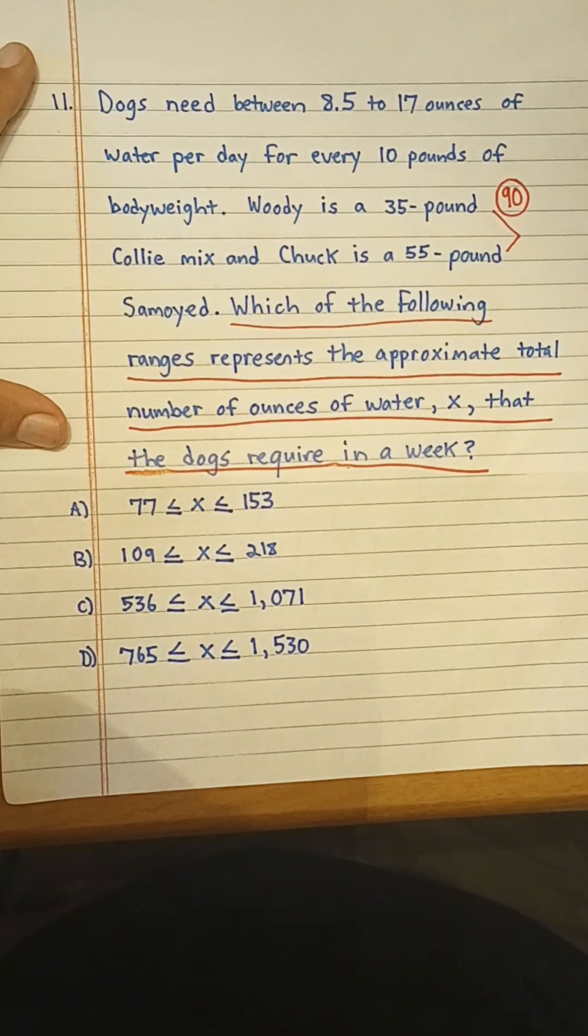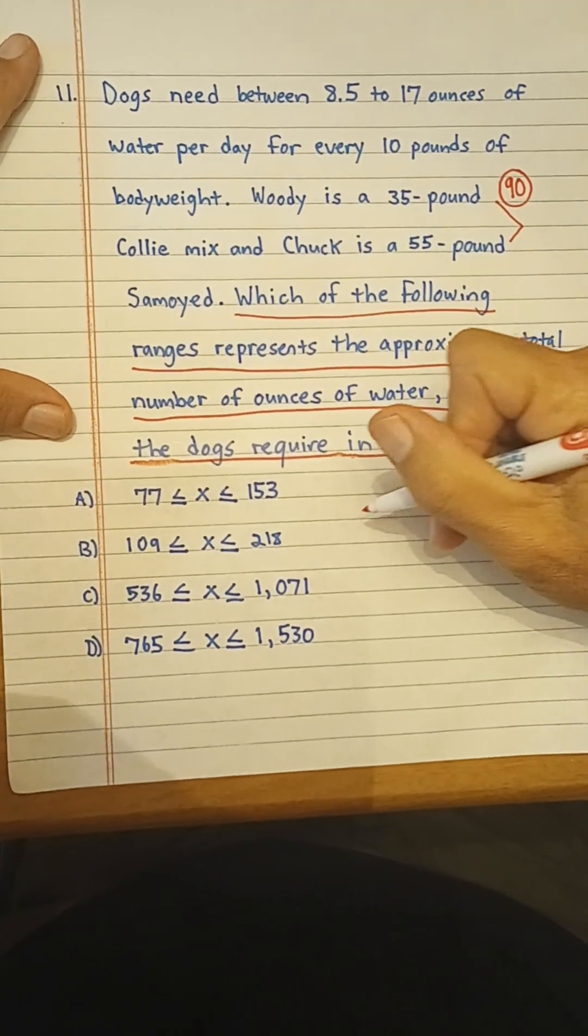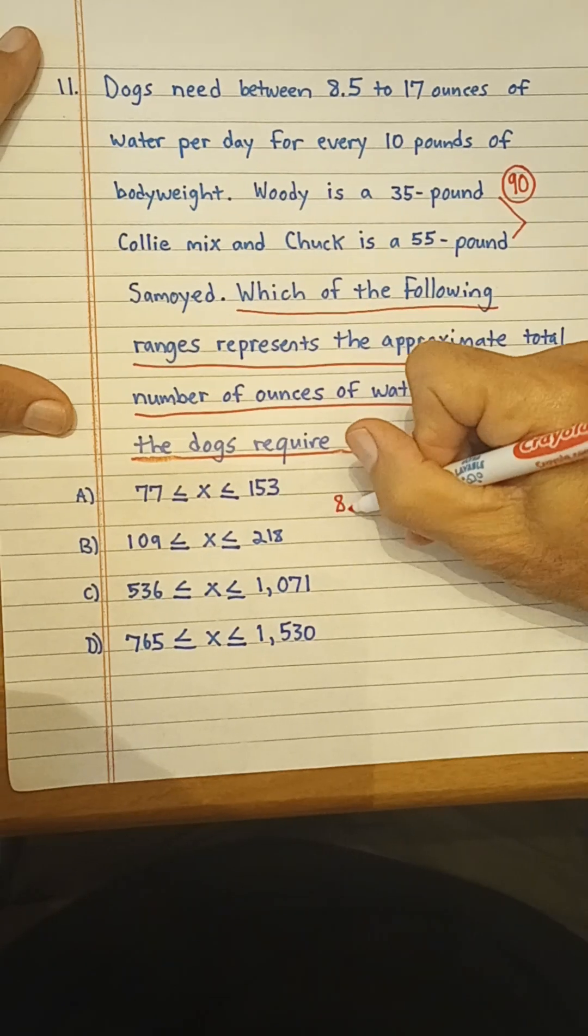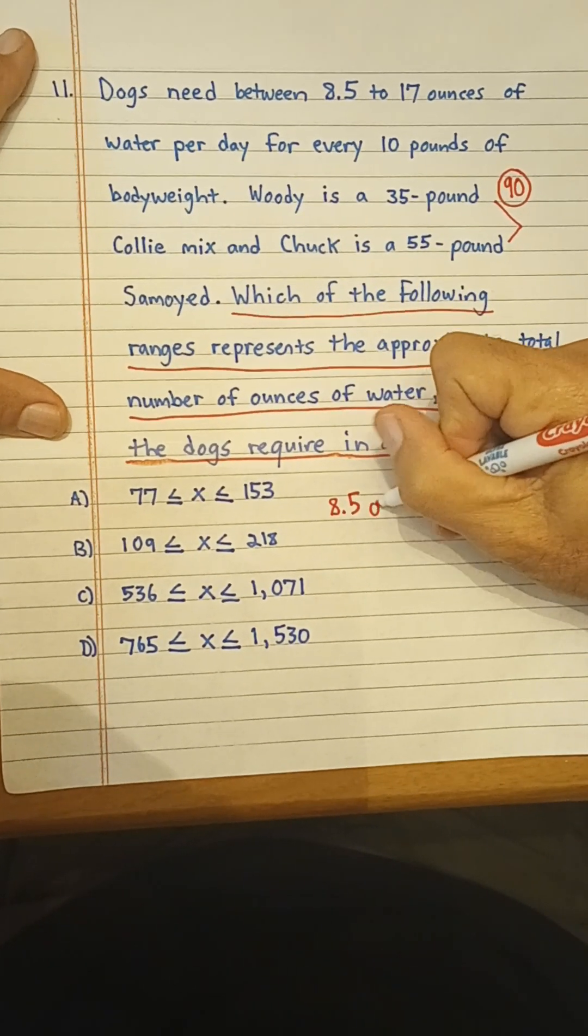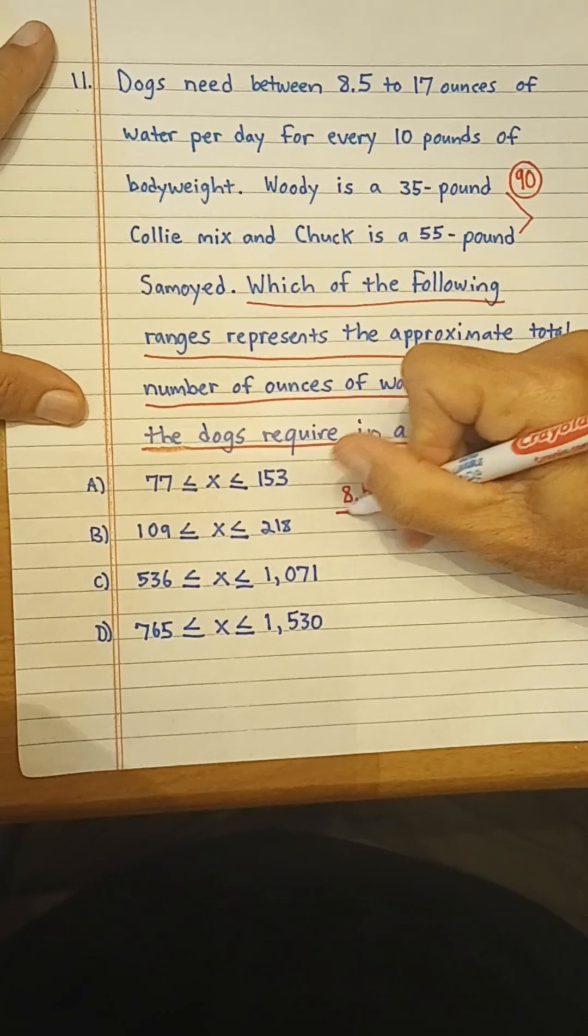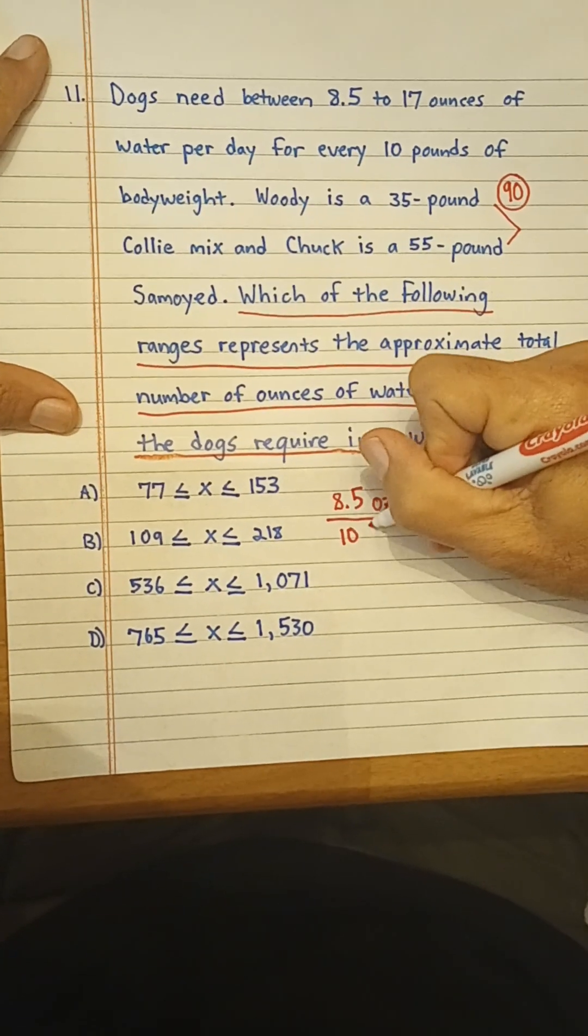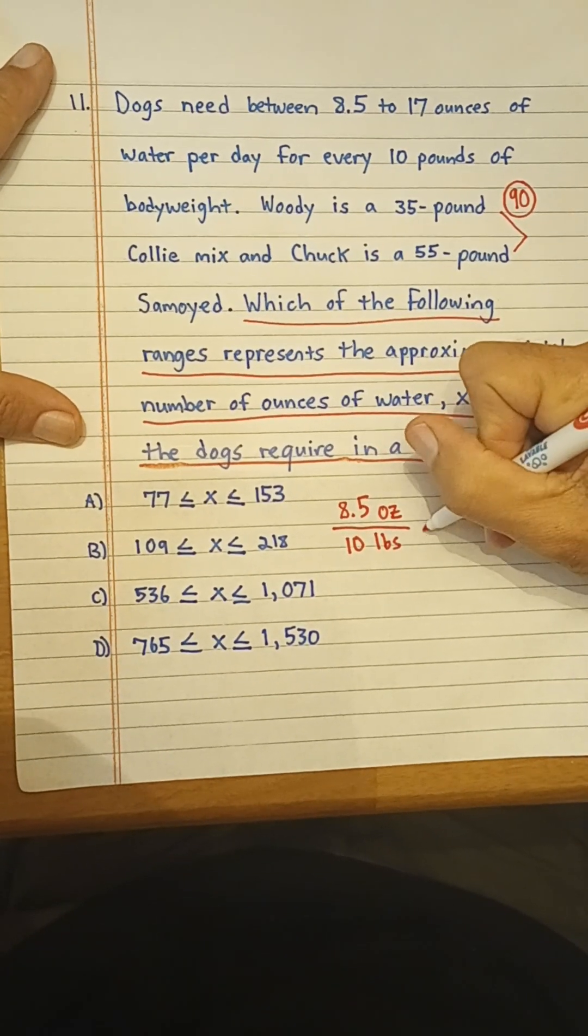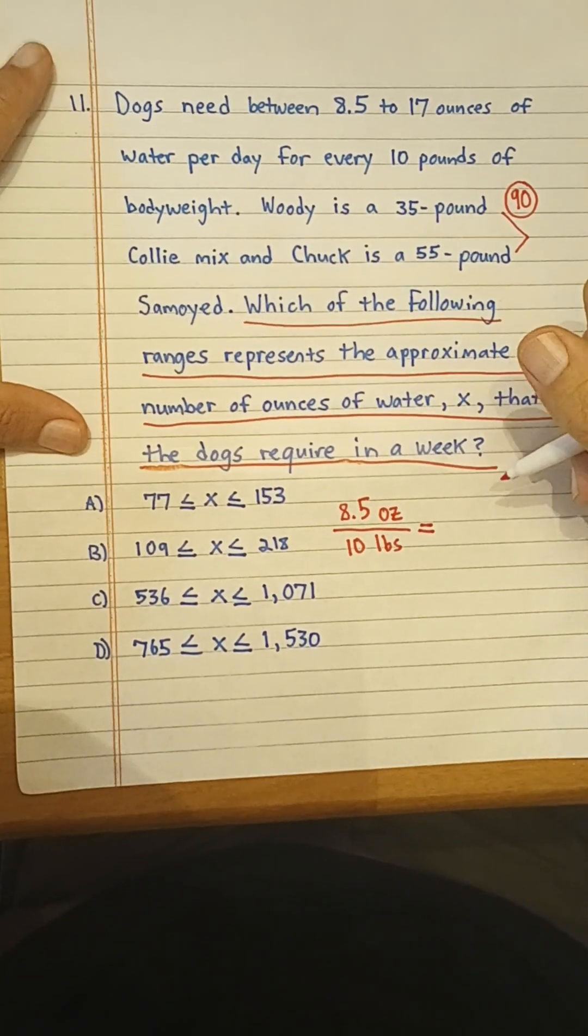Which is 8.5 ounces, right? So we're going to do 8.5 ounces for every 10 pounds of body weight, and we're going to set that equal to,